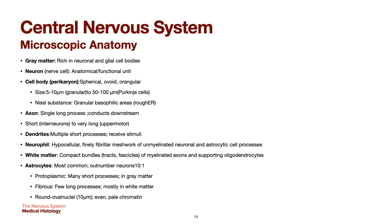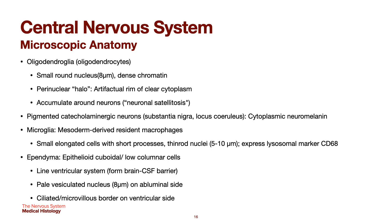Neuropil is a hypocellular, finely fibrillar matrix of unmyelinated neuronal and astrocytic cell processes. White matter consists of compact bundles of myelinated axons and supporting oligodendrocytes. Astrocytes are the most common glial cells, outnumbering neurons at a ratio of at least 10 to 1. There are different types of astrocytes: protoplasmic, fibrous, with round oval nuclei. Oligodendroglia or oligodendrocytes have small round nuclei around 8 micrometers with dense chromatin and a perinuclear halo. They accumulate around neurons — we call it neuronal satellitosis.